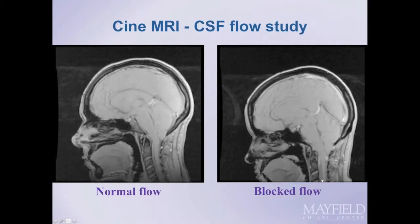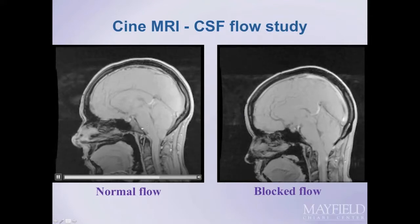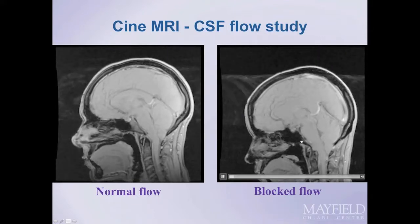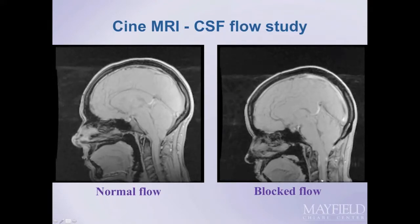Another helpful test for diagnosing Chiari malformation is known as the Cine MRI, also referred to as a CSF or cerebrospinal fluid flow study. Videos demonstrate what normal flow looks like across the foramen magnum at the base of the skull. The abnormality is shown where fluid is blocked and cannot be seen sloshing back and forth between the brain and spinal canal. This is a key study in the diagnosis and treatment of Chiari malformation, and is a good way to establish whether flow is obstructed enough to warrant surgery.